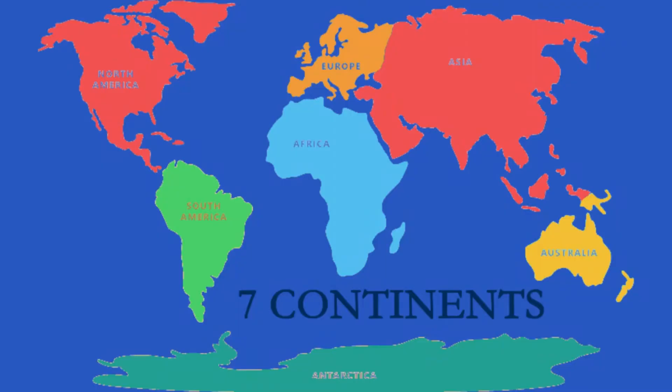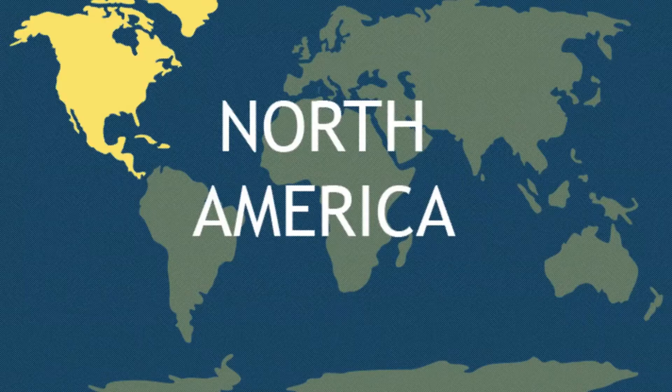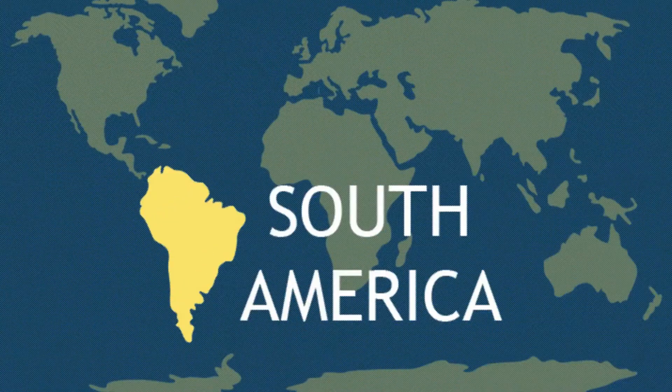There are seven continents in the world. Twenty-nine percent is covered by land, which consists of continents and islands. A continent is a large, uninterruptedly spread inland mass surrounded by water. The seven continents are: North America and South America.